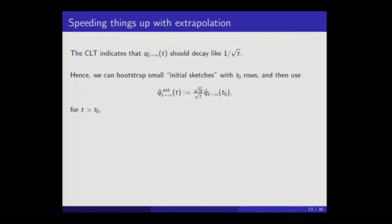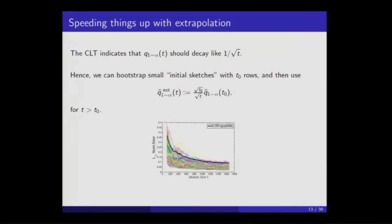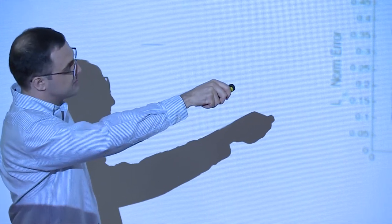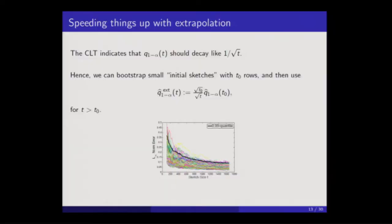This scaling property is simple but crucial, because it allows you to consider a small initial sketch size t0. You run the bootstrap at t0, which gives you a number. Then you form an extrapolated estimate that agrees with the initial estimate at t0 and then follows a 1-over-square-root-of-t extension thereafter. So when t equals t0 the two things agree, and you just get a 1/sqrt(t) extension beyond that. As simple as that rule might seem, it works surprisingly well in a surprisingly broad range of conditions.